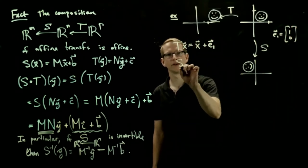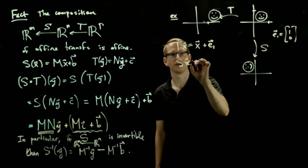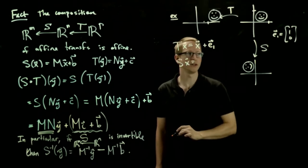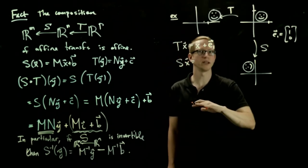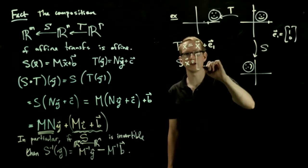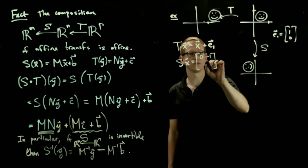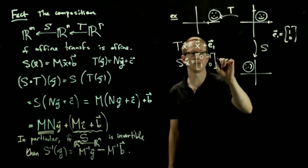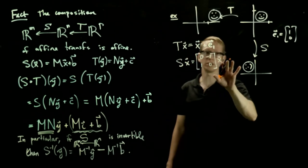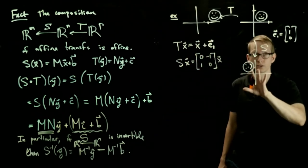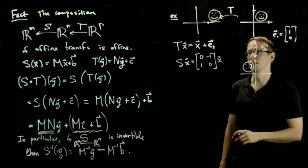And S of x is the transformation that rotates by 90 degrees. So I'm going to write that in matrix form, because rotation by 90 degrees is 0, negative 1, 1, 0 applied to the vector x. And the B here is 0, because this is actually a linear transformation.